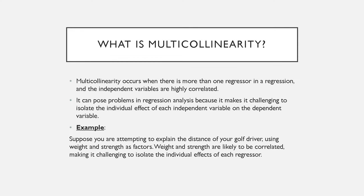What is multicollinearity? Multicollinearity occurs when there is more than one regressor in a regression and the independent variables in the model are highly correlated. This can create many problems in regression analysis because it can make it challenging to isolate the individual effect of each independent variable on the dependent variable. I'm going to give you an example to illustrate a bit better what we mean by multicollinearity.